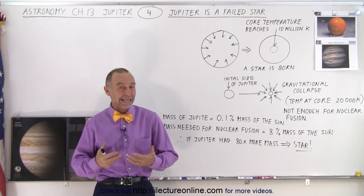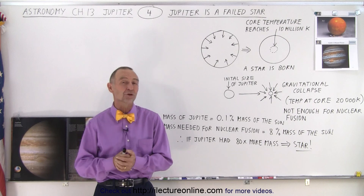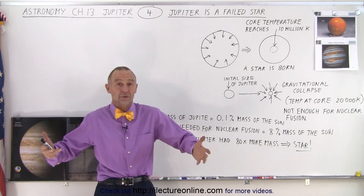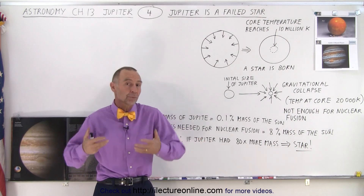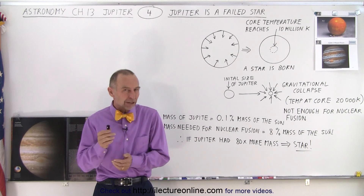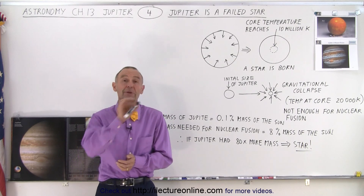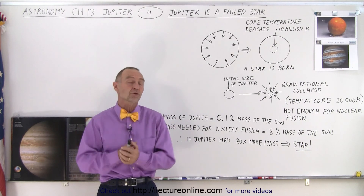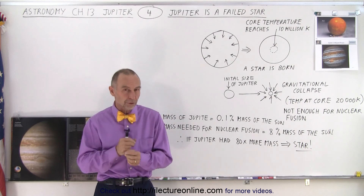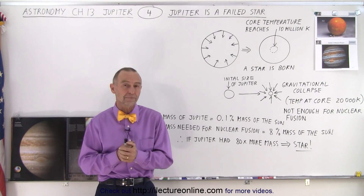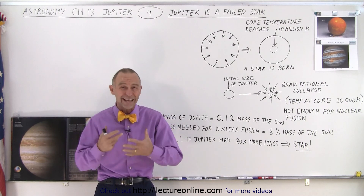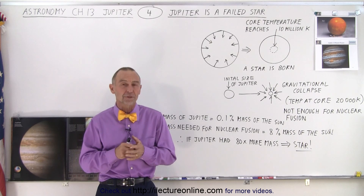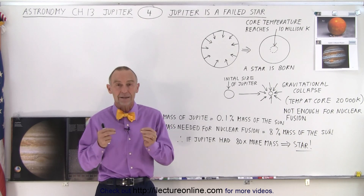Jupiter is actually a failed star. And what do we mean by that? Because Jupiter is a planet, how could Jupiter be a star? But if we watch the previous video we realize that the composition of Jupiter is very similar to that of the Sun — almost exactly the same. So what is the difference? The difference simply is size.